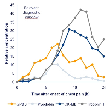A biomarker, or biological marker, is a measurable indicator of some biological state or condition. Biomarkers are often measured and evaluated to examine normal biological processes, pathogenic processes, or pharmacologic responses to a therapeutic intervention. Biomarkers are used in many scientific fields.